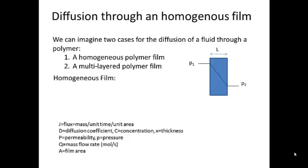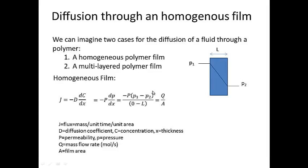Let's begin with the simpler case of a homogeneous film. In this situation, we assume that we have constant pressure P1 on the inside of the polymer membrane and constant pressure P2 on the outside of the polymer membrane. This sets up a diffusion gradient across the polymer membrane that is linear. Whenever we have a linear gradient across the thickness of the polymer membrane like this, we assume Fick's First Law. Fick's First Law says that the flux, or the mass per unit time per unit area traveling through the material, is equal to minus D, the diffusion coefficient, times the concentration gradient, or the change in concentration with respect to the distance traveled.